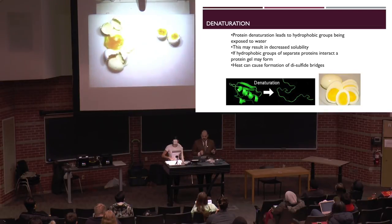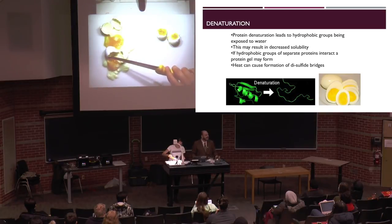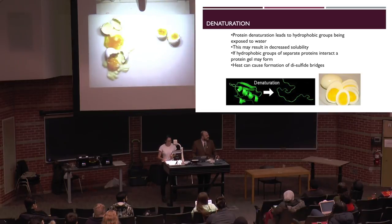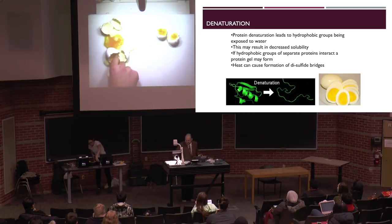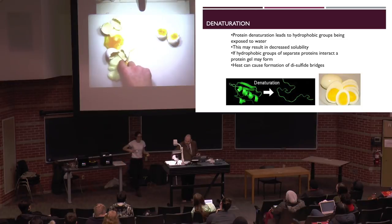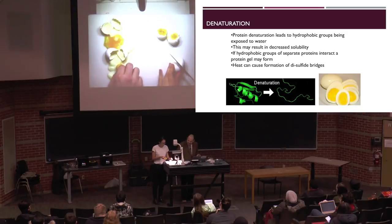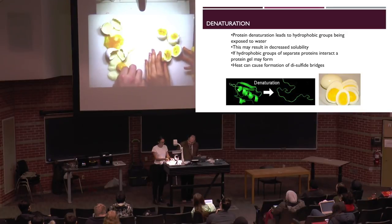Denaturation may decrease solubility, and if hydrophobic groups of separate proteins interact, we get gelation. You can peel that egg white off and it's still pretty fluid. Increased protein unfolding gives a larger hydrodynamic radius — the larger the radius, the more likely proteins bump into each other, and viscosity goes up. How you cook meat, the temperature and time, changes its texture. The thickness of yogurt is dependent on protein denaturation. Foams, jellos, textures of bread — all dependent on protein denaturation.